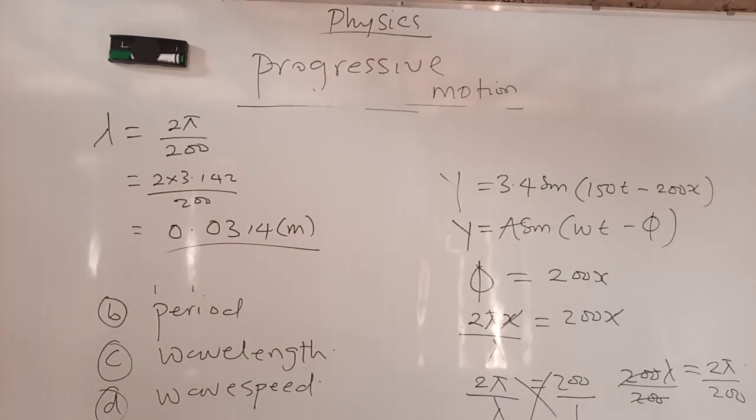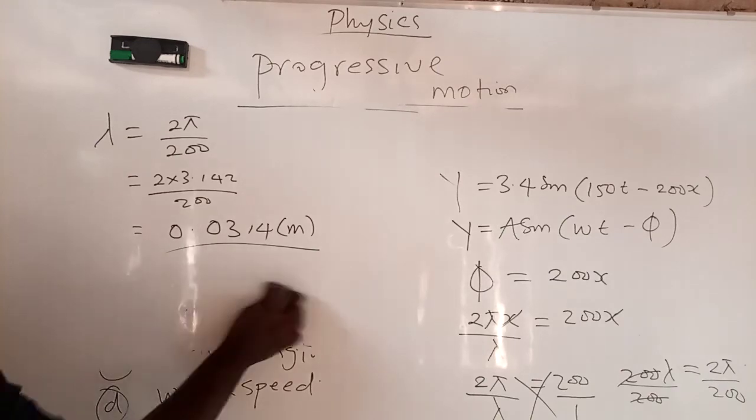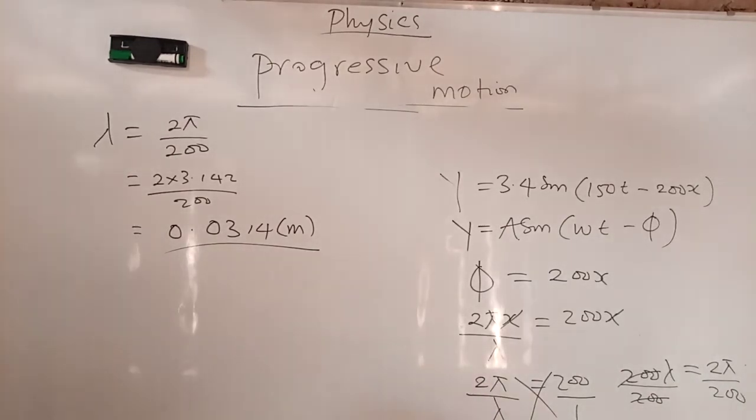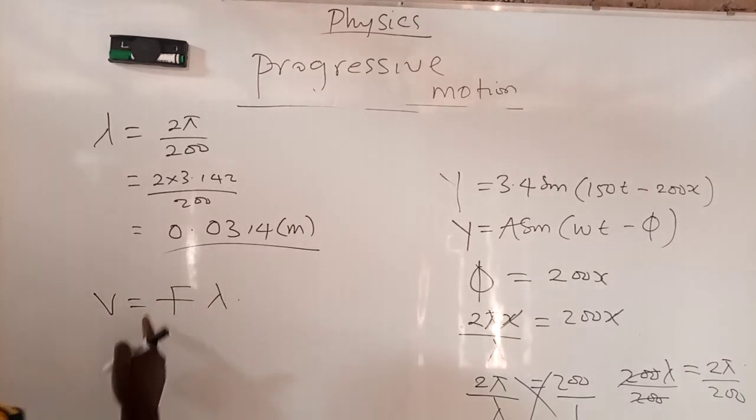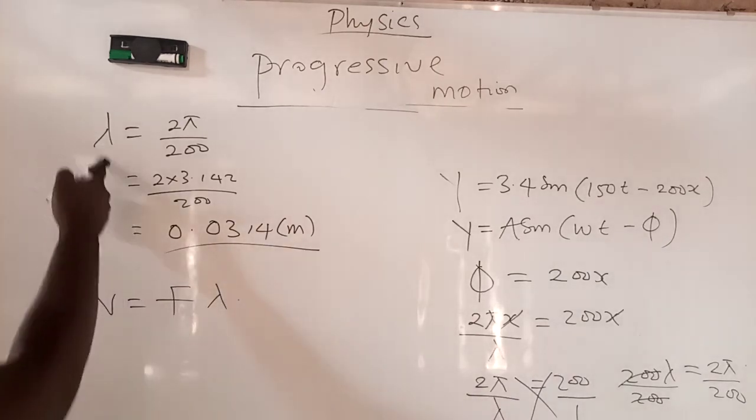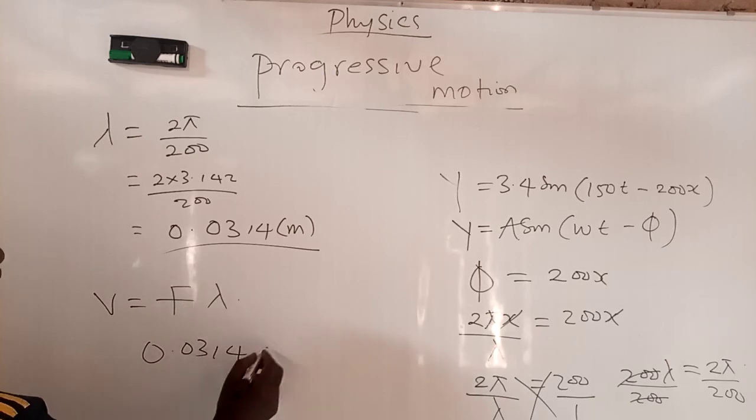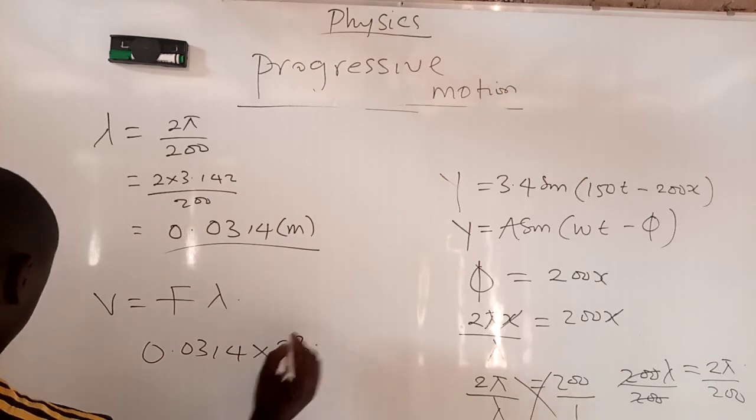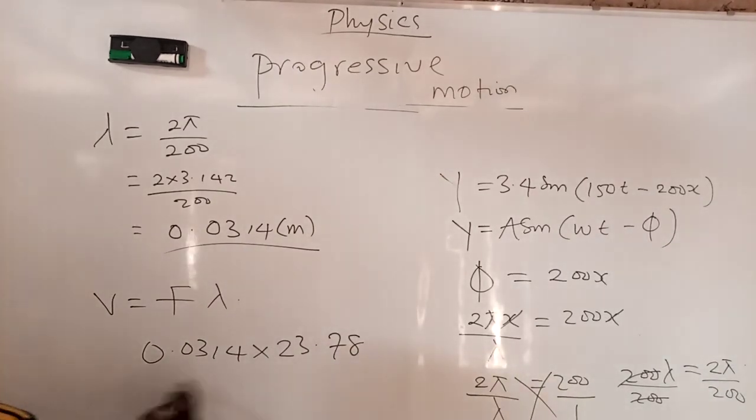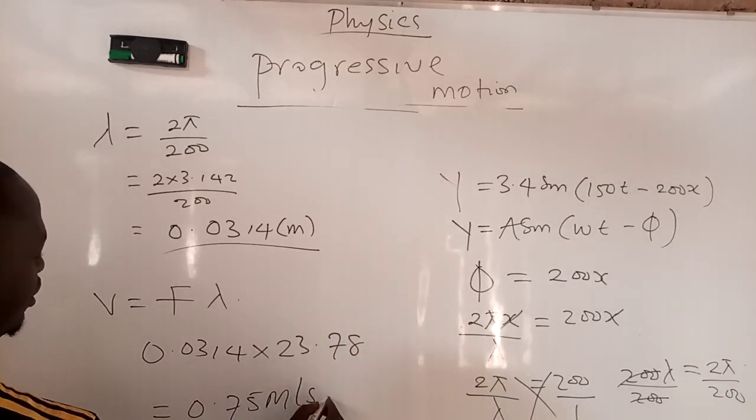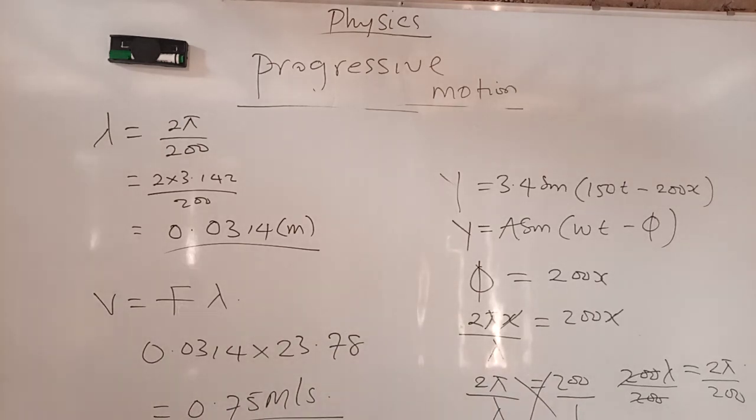The last question is to calculate the wave speed, which is the velocity. And that is very easy. We already know that velocity from part 1 of the video is F lambda. You already know the answer to your frequency, the answer to your wavelength. So all you need to do is you insert it and the answer will flow naturally. The wavelength is 0.0314 times the frequency 23.78. When you put these 2 values in your calculator, you should get 0.75. And the SI unit of velocity is meter per second.